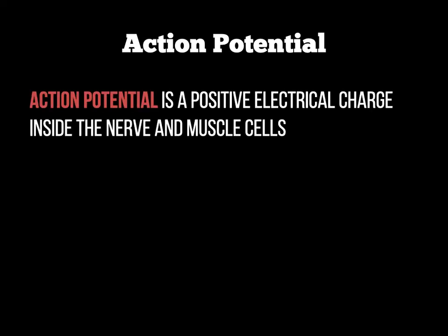In order to make a muscle contract, we need something called action potential. It's a positive electrical charge inside the nerve and muscle cells. The way to think about this is a branch of electricity flowing to a muscle fibre — it's not quite electricity, but imagine that it is.